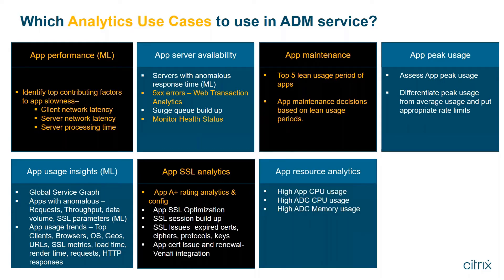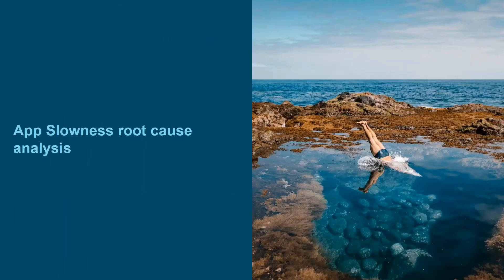Finally, app resource analytics helps identify high CPU usage on the ADC, high memory usage on the ADC, and high application CPU usage — including if any specific application is consuming high memory on the ADC. Now let's understand the first use case in detail: app slowness root cause analysis.